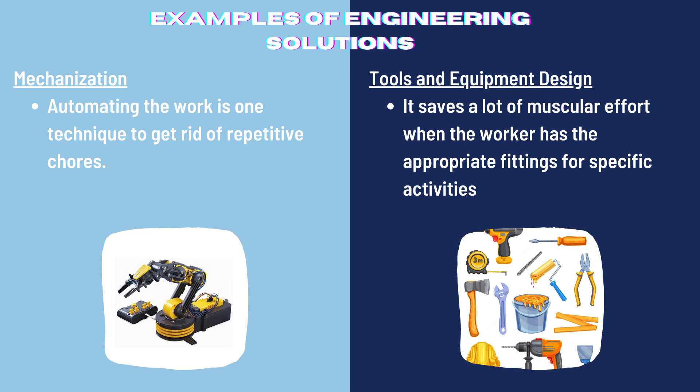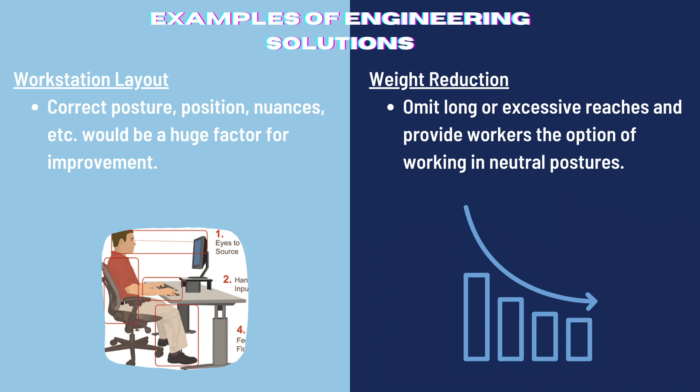One engineering solution could be mechanization — automating work is one technique to eliminate repetitive chores, with other options available where mechanization is not practical. Second is tools and equipment design — having appropriate fittings or jigs for activities that involve holding objects in odd postures saves a lot of muscular effort. Third is workstation layout — correct posture, position, and related factors would be a huge factor for improvement. Fourth and lastly is weight reduction — omit long or excessive reaches and provide workers the option of working in neutral postures.